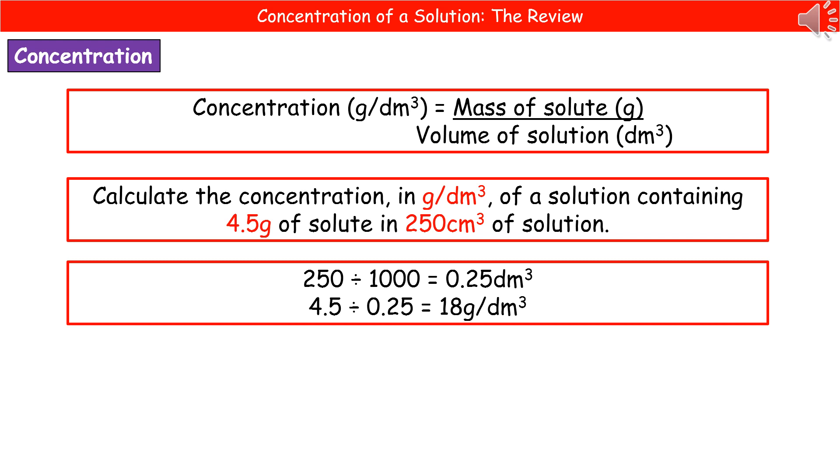Then in order to work out the concentration, it's just the mass divided by the volume. So 4.5 divided by 0.25 gives us 18 grams per decimeter cubed.